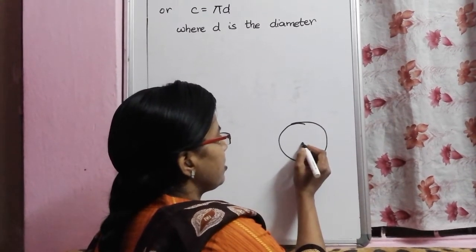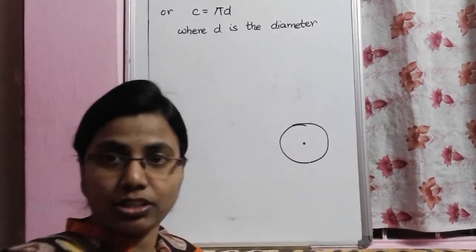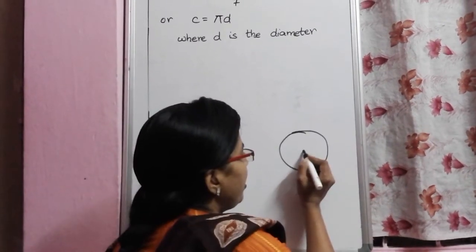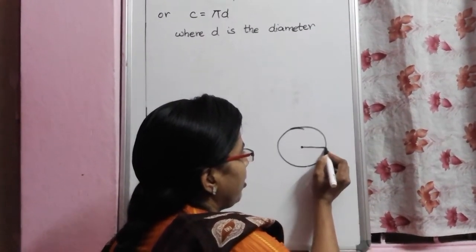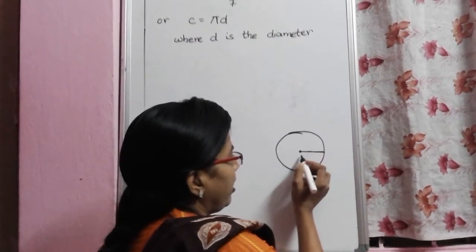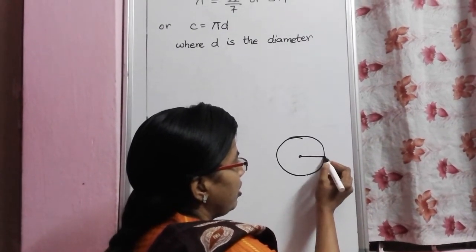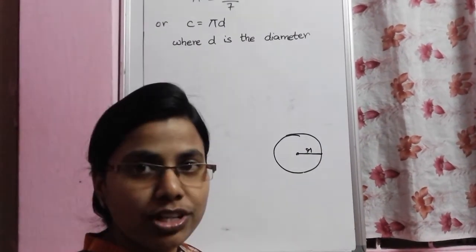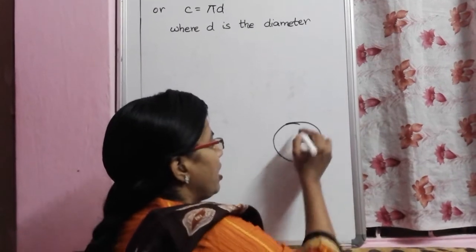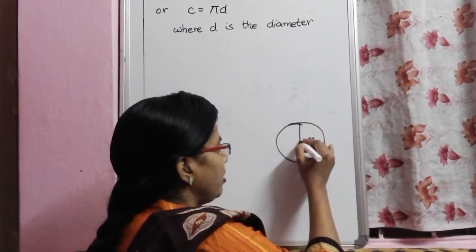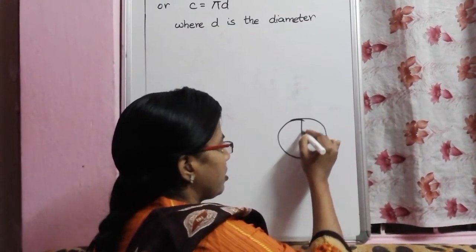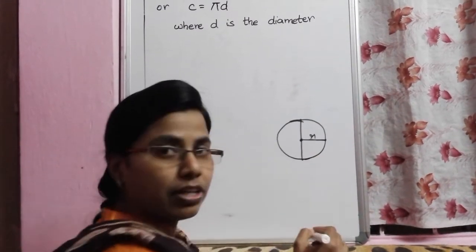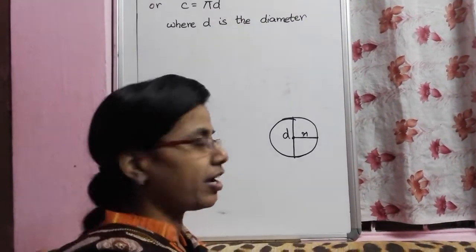If this is a circle and this is the center of the circle, if I draw a line from the center of the circle touching the circle, this is called the radius. If I draw a line touching the center of the circle and touching the two sides of the circle, that is called the diameter.